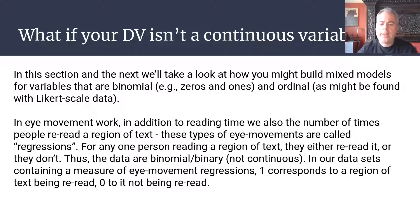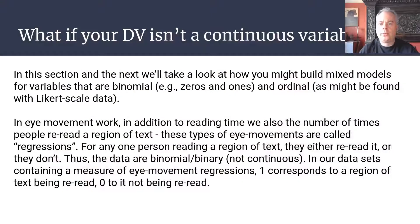In the context of the binomial model that we're going to build, in my own research area—eye movement research—typically we'll have a set of measures that are measured using ones and zeros. In addition to measuring eye movements as people read, we also measure whether or not they reread a previously encountered section of text. These types of eye movements are known as eye movement regressions, and they're coded in our data set as being a one or a zero, with one corresponding to somebody rereading a particular region of text and a zero corresponding to them not rereading that particular region of text.